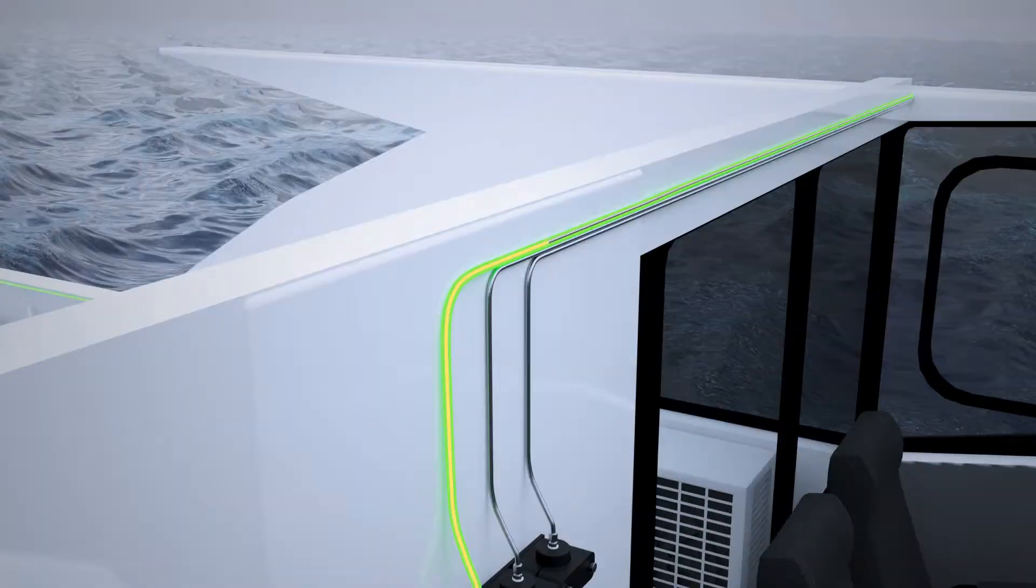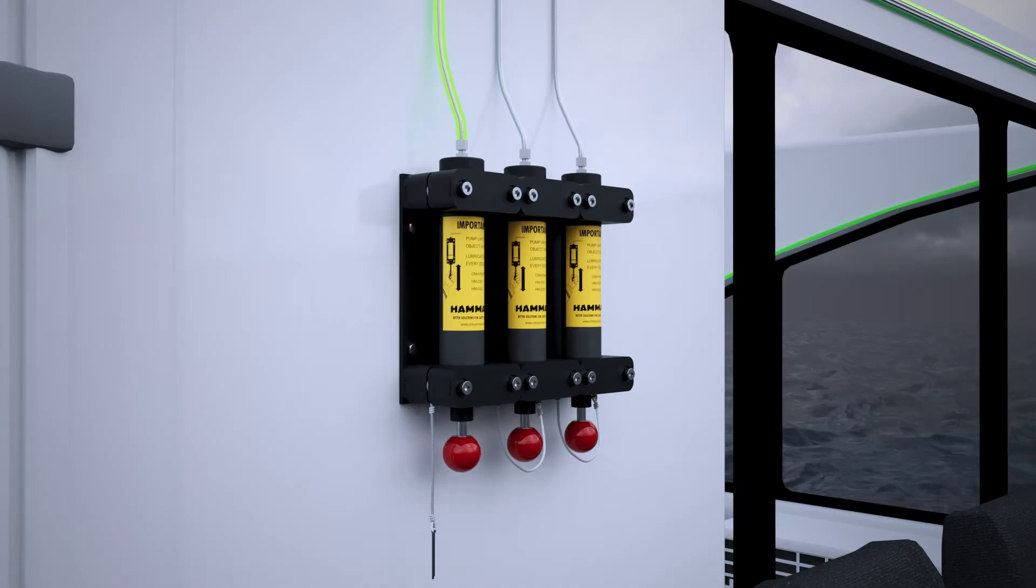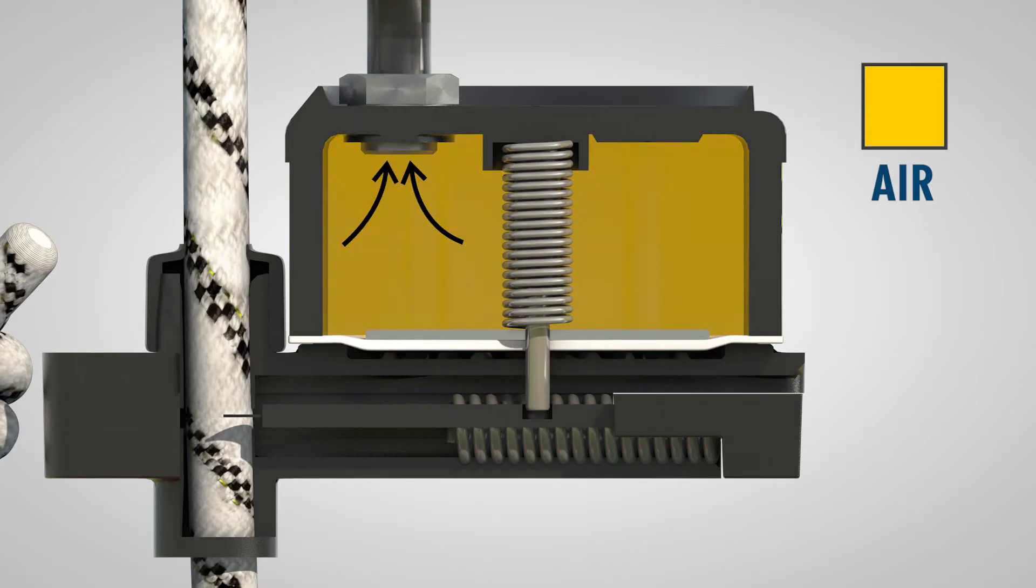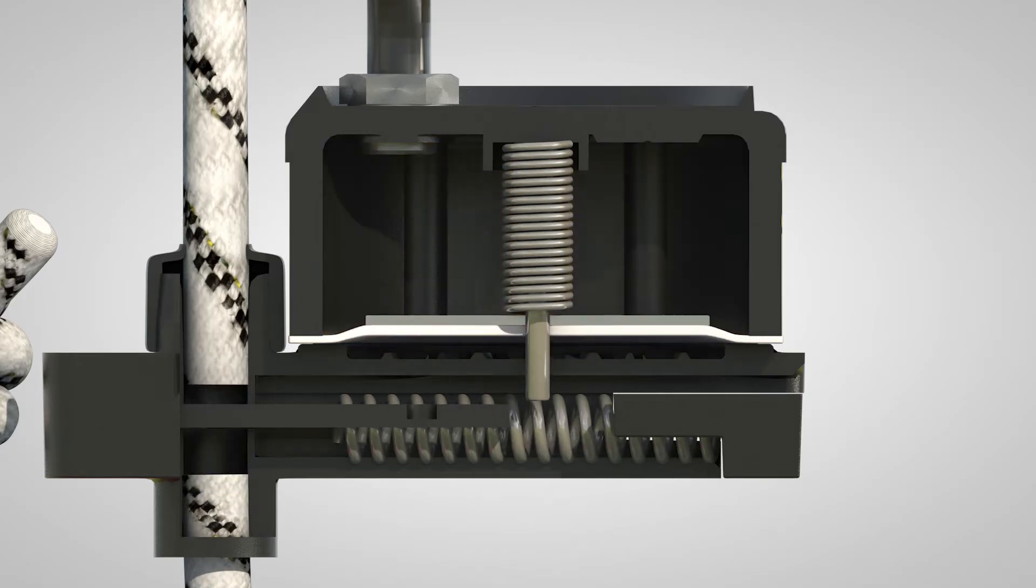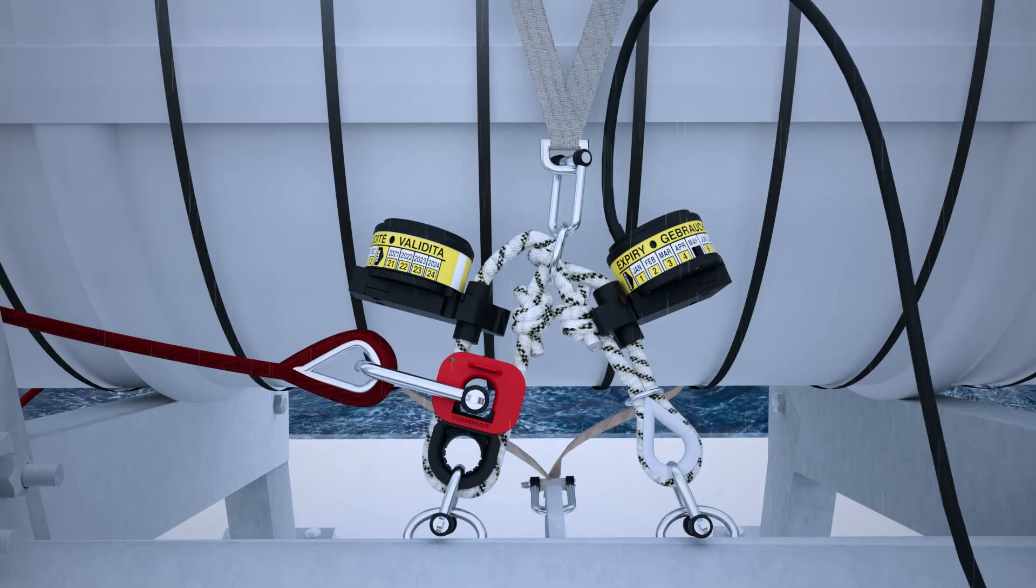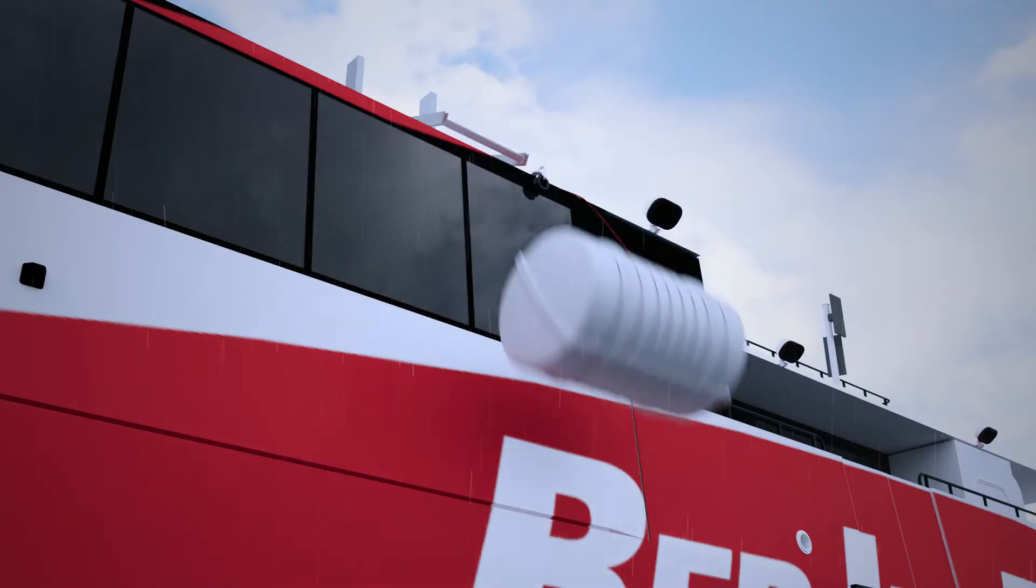This reduction in air pressure pulls the membrane upwards, lifting the retaining pin out of the notch and the blade instantly springs forward to cut through the H20 strong rope releasing the lashings. The life raft or life buoy will be deployed.